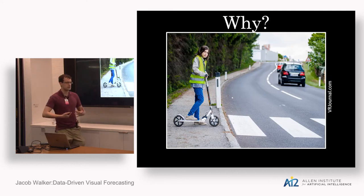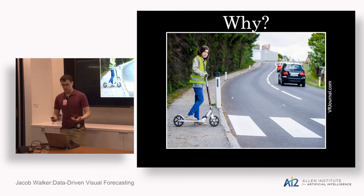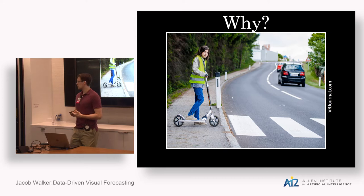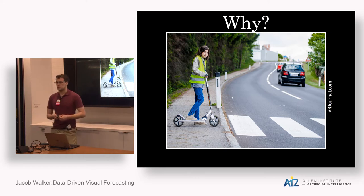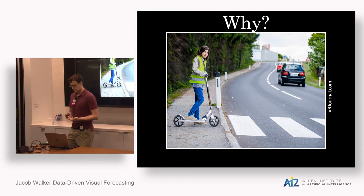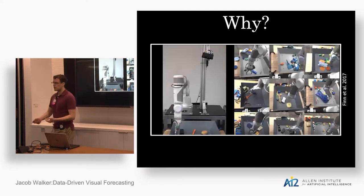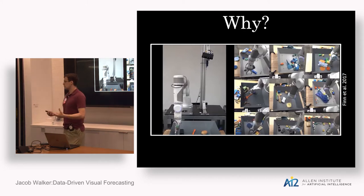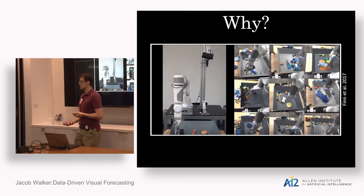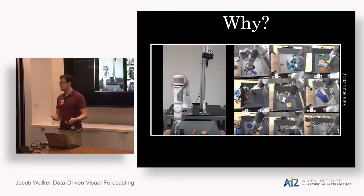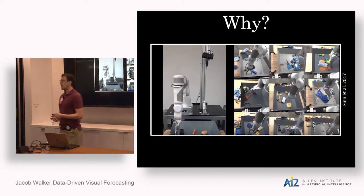Another practical application is self-driving cars. We don't want cars to run over other people or other cars. For instance, what is the probability that this person is going to cross the street? And more generally, if we think not only about robots but computers in general interacting with their environment, it would be useful for high-level tasks like planning and decision-making to understand the consequences of your actions — if I'm a robot moving objects around, if I'm a car applying acceleration, how do my actions affect the future state of that visual world?